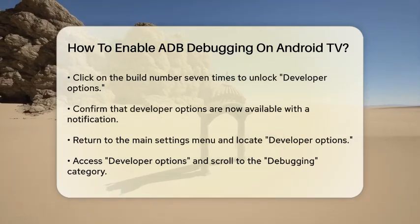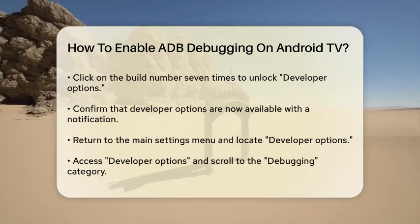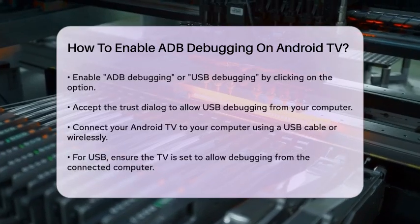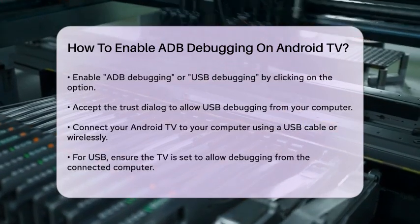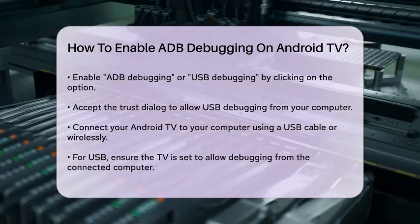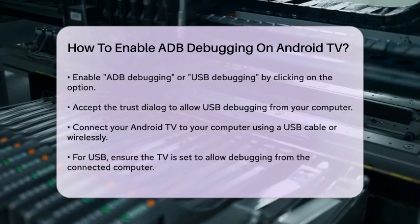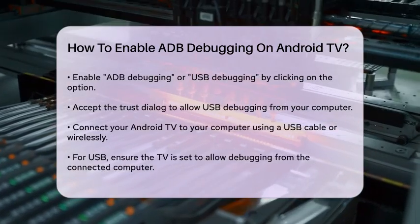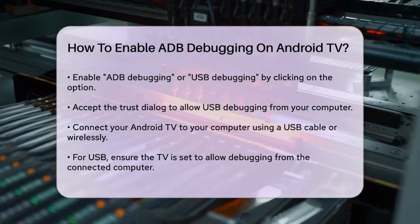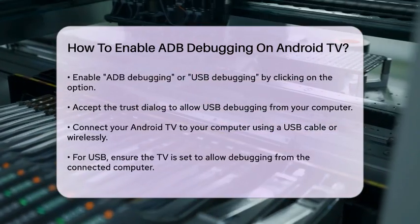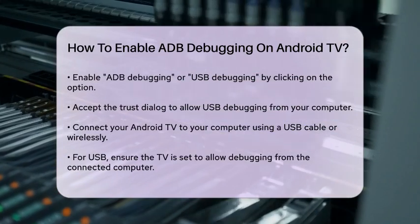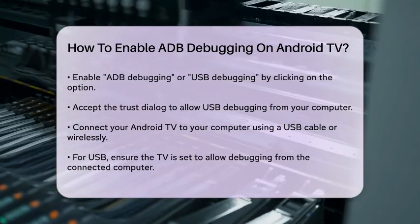When you enable ADB Debugging, your TV might prompt you with a Trust dialog asking if you want to allow USB Debugging from your computer. Make sure to select Always Allow from this computer and click OK.